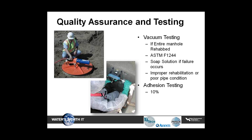If the entire manhole, including invert and pipe penetrations, is rehabilitated to as-new condition, then a vacuum test may be performed according to ASTM F1244. If the vacuum test fails, the contractor shall spray the entire manhole with a soap solution and retest. The inspector shall determine if failure was due to improper rehabilitation, poor pipe condition, or improperly seated plugs. If the inspector determines that the failure is due to improper rehabilitation, the contractor shall repair according to manufacturer recommendations and retest until a successful vacuum test is achieved.